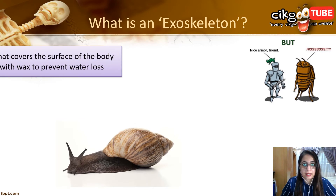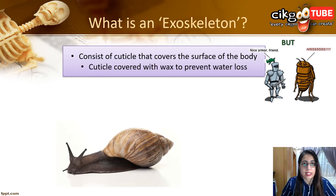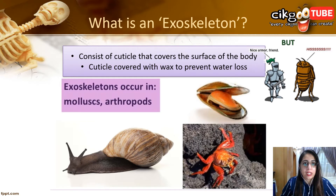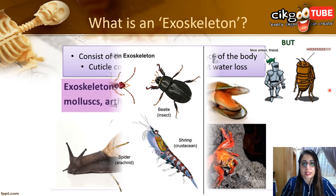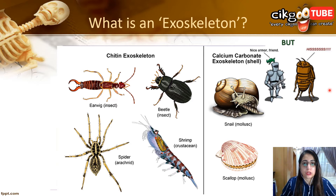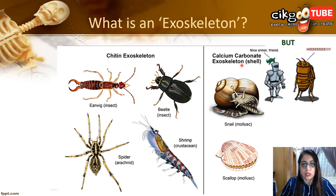Exoskeleton is made up of hard and rigid substances like chitin and calcium. Segmented chitin exoskeletons provide protection, support, and allow movement in animals of phylum Arthropoda, for example insects and crabs. Calcium carbonate exoskeletons provide protection and support the ability to swim for some animals, especially in the class Mollusca, such as seashells, bivalves, and oysters. So we have two types: chitin exoskeleton and calcium carbonate exoskeleton.